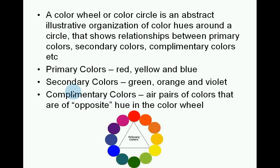A colour wheel, or colour circle, is an abstract illustrative organisation of colour hues around a circle that shows relationships between primary colours, secondary colours and complementary colours. Primary colours consist of red, yellow and blue. Secondary colours consist of green, orange and violet. Complementary colours are pairs of colours that are of opposite hue in the colour wheel — for example, red and green.